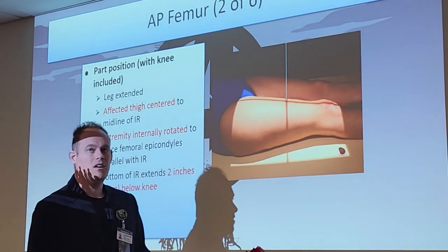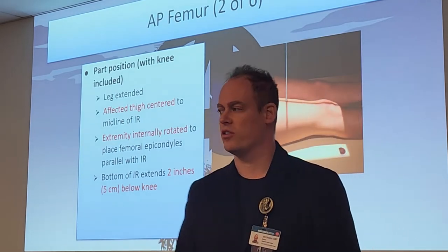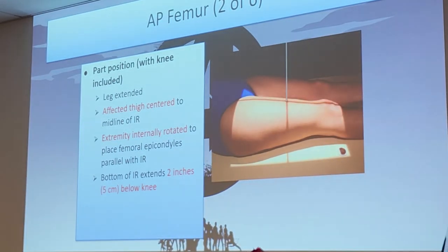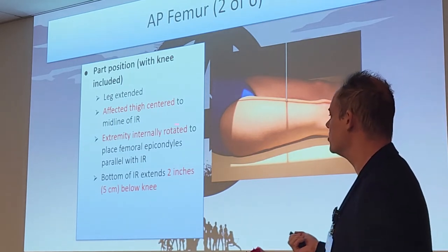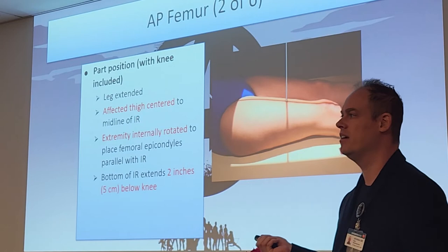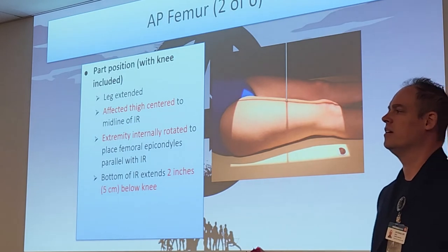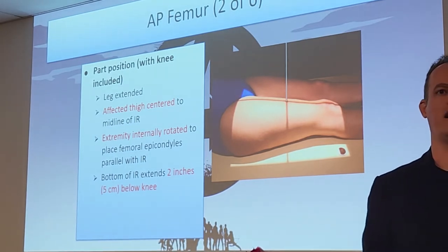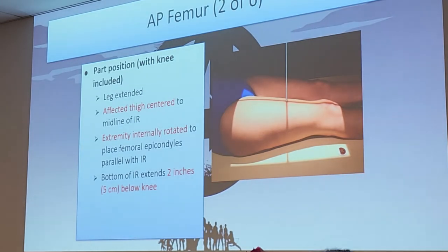The AP femur lower — also called AP femur with knee included. Center the affected thigh to the IR. We internally rotate the extremity slightly by turning the foot to place the femoral epicondyles parallel with the IR. The bottom of the IR or light field will be approximately two inches below the knee — you need the entire knee joint, not just the top part, so there will be some tibia and fibula on there.